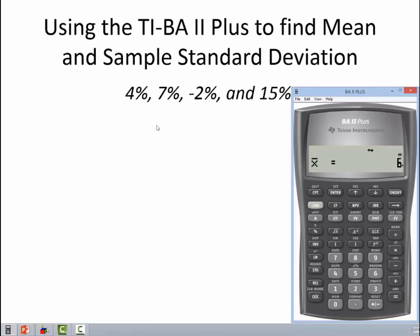In fact, we could do a quick check. 4 plus 7 is 11. Minus 2 is 9. Plus 15 is 24. 24 divided by 4 is 6. So we know that's right.